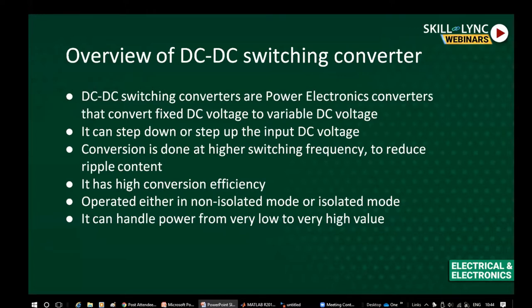This conversion is done at high switching frequency. Our aim is to get variable DC voltage, so we switch the switch on and off at a very high frequency. The reason for using high frequency switching is to reduce the ripple content in the output. The conversion is done at very high frequency so that ripple content in the output will be less.